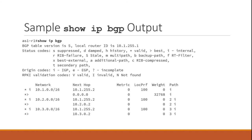Looking at the other networks, AS2 is originating 10.2.0.0/16 and AS3 is originating 10.3.0.0/16 — we can tell this based on the AS path. For each prefix, the top entry matches our IBGP neighbor, as we also saw for the 10.1.0.0 network. The second entry for each prefix has a different IP that appears to belong to the corresponding AS, meaning those routes were received from external BGP or eBGP neighbors and represent a direct path to the corresponding AS.